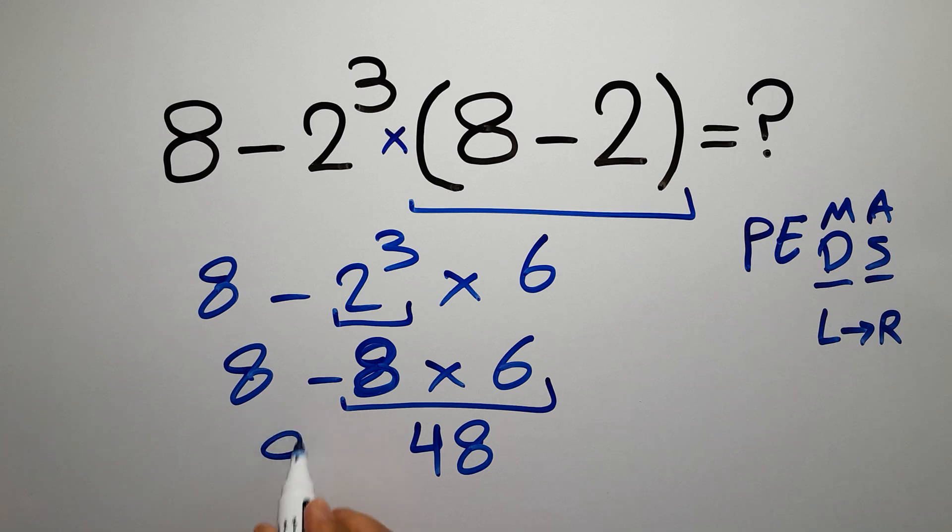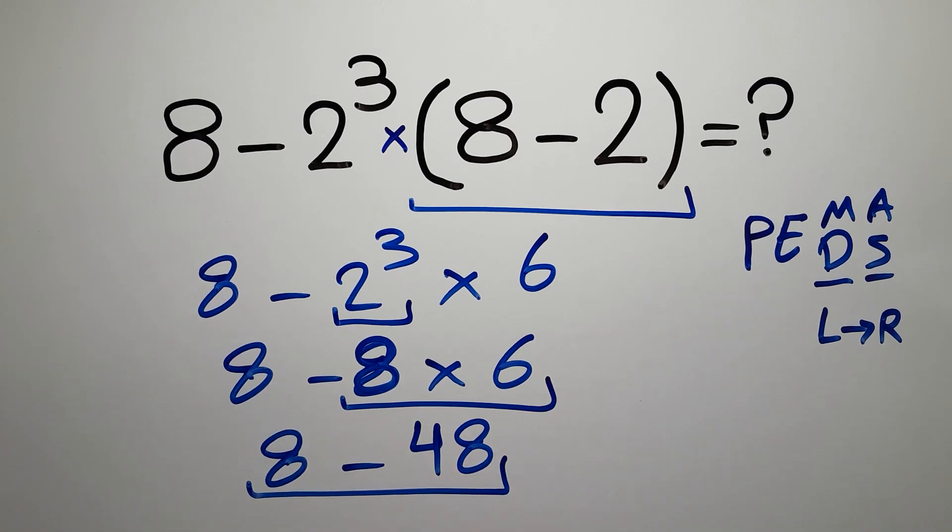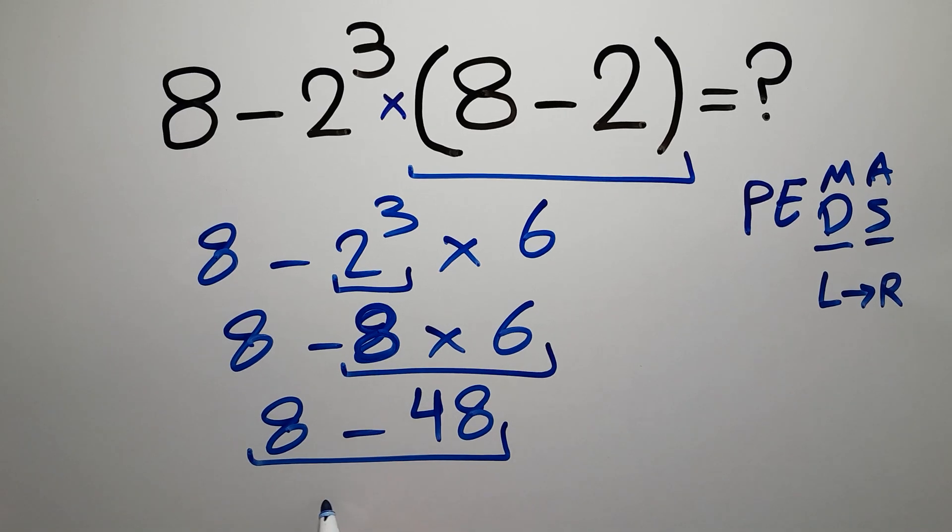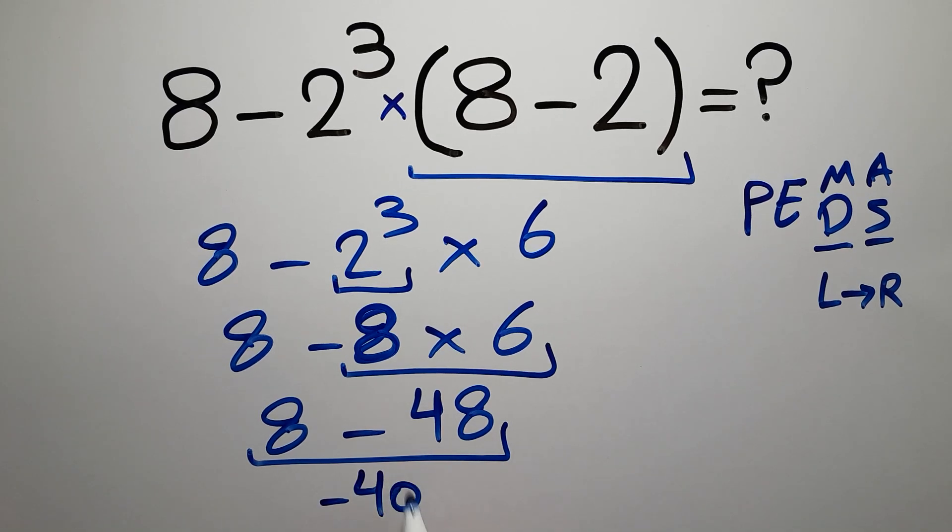So we have 8 minus 48 which equals negative 40. Negative 40. And this is our final answer to this problem.